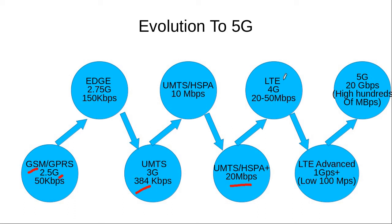Then we moved from 3G to 4G. In the case of LTE technology, a user experienced a data rate of between 20 to 50 Mbps. LTE then evolved into LTE Advanced, where the peak targeted data rate for a user was 1 Gbps, but the actual data rate experienced in normal conditions was in the low to few hundred Mbps range.